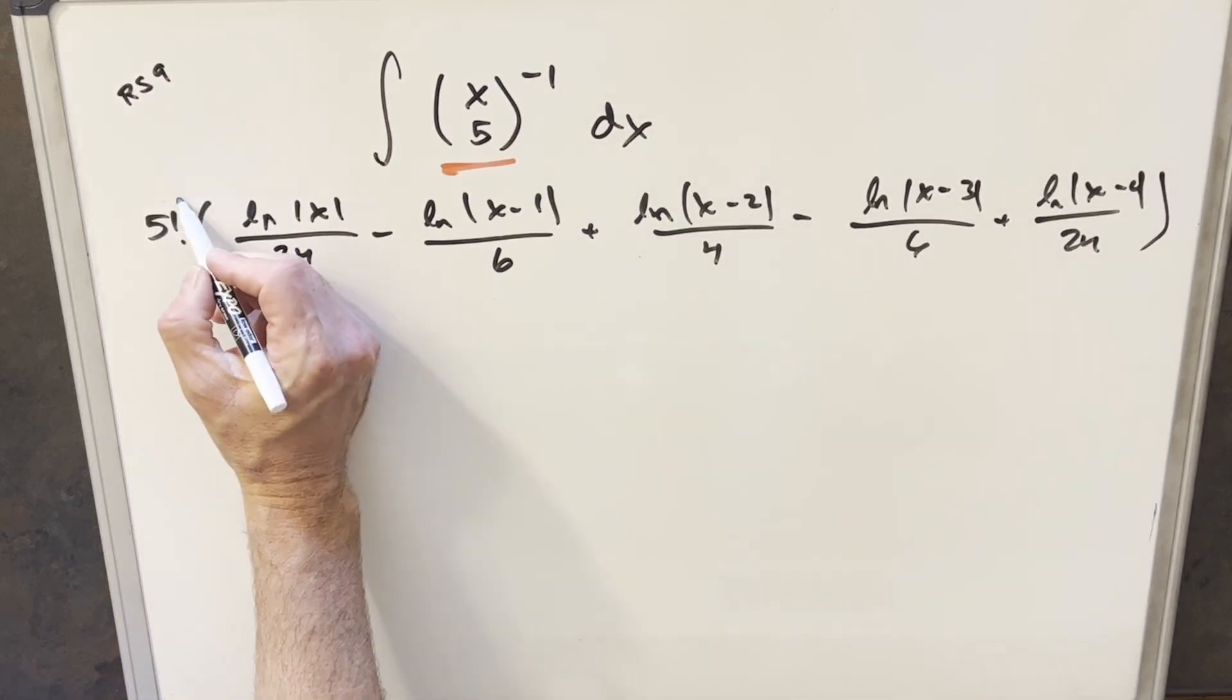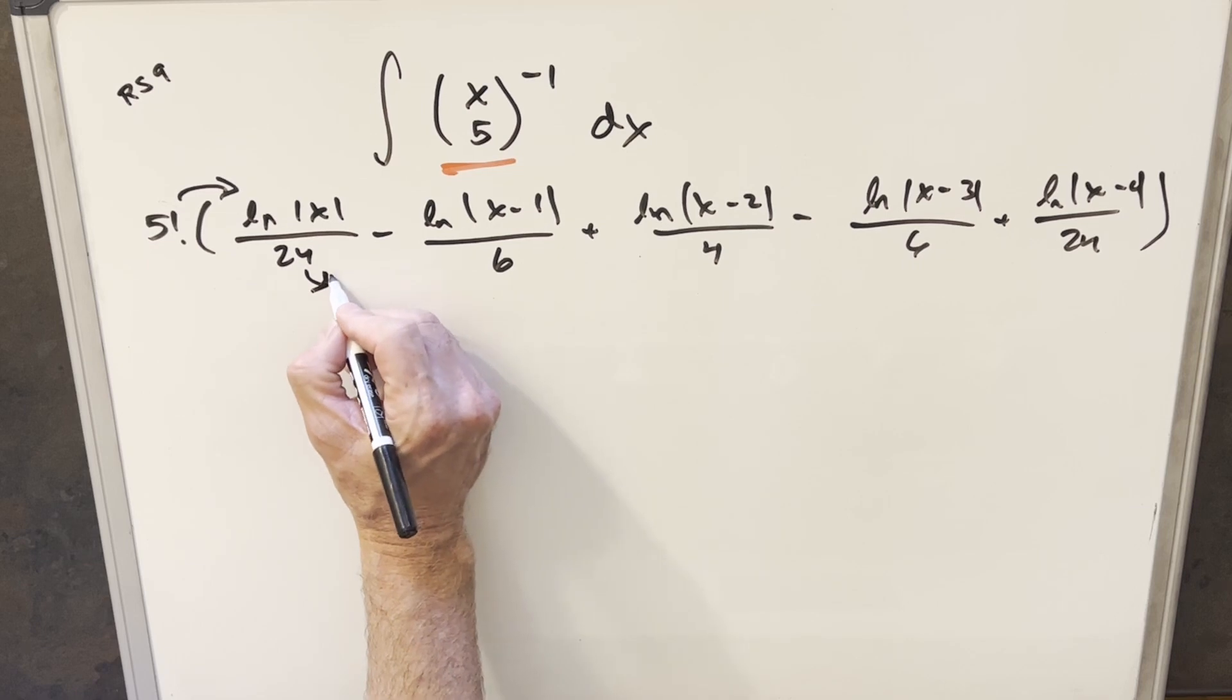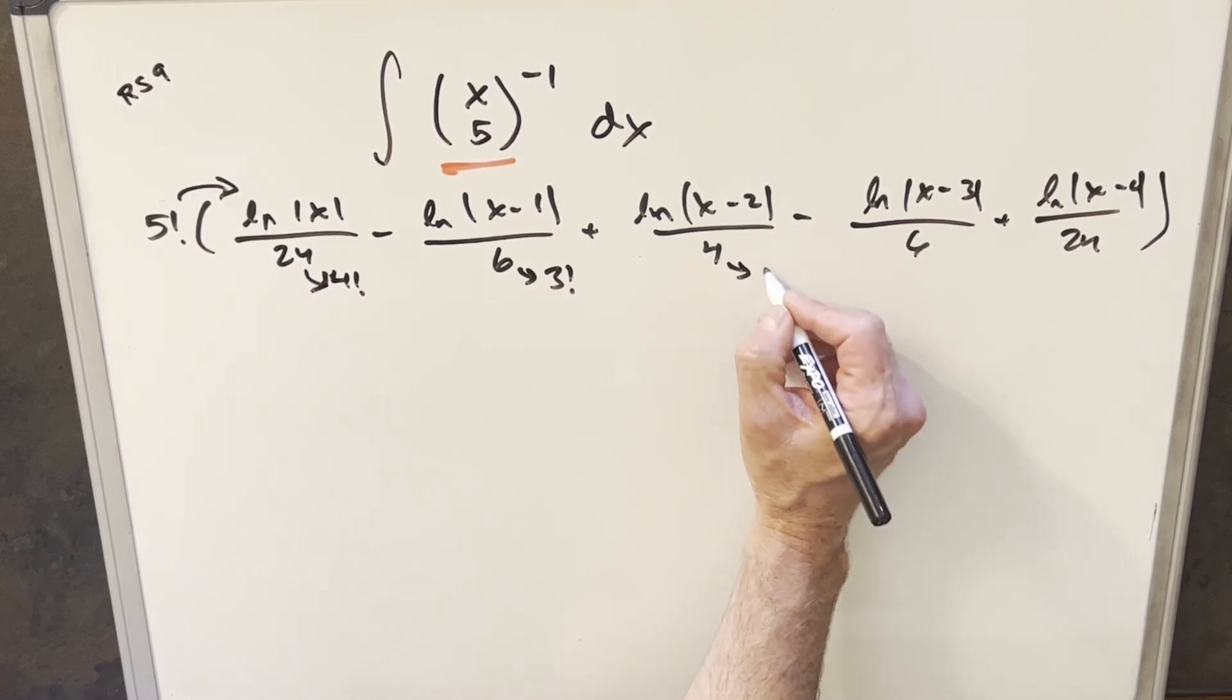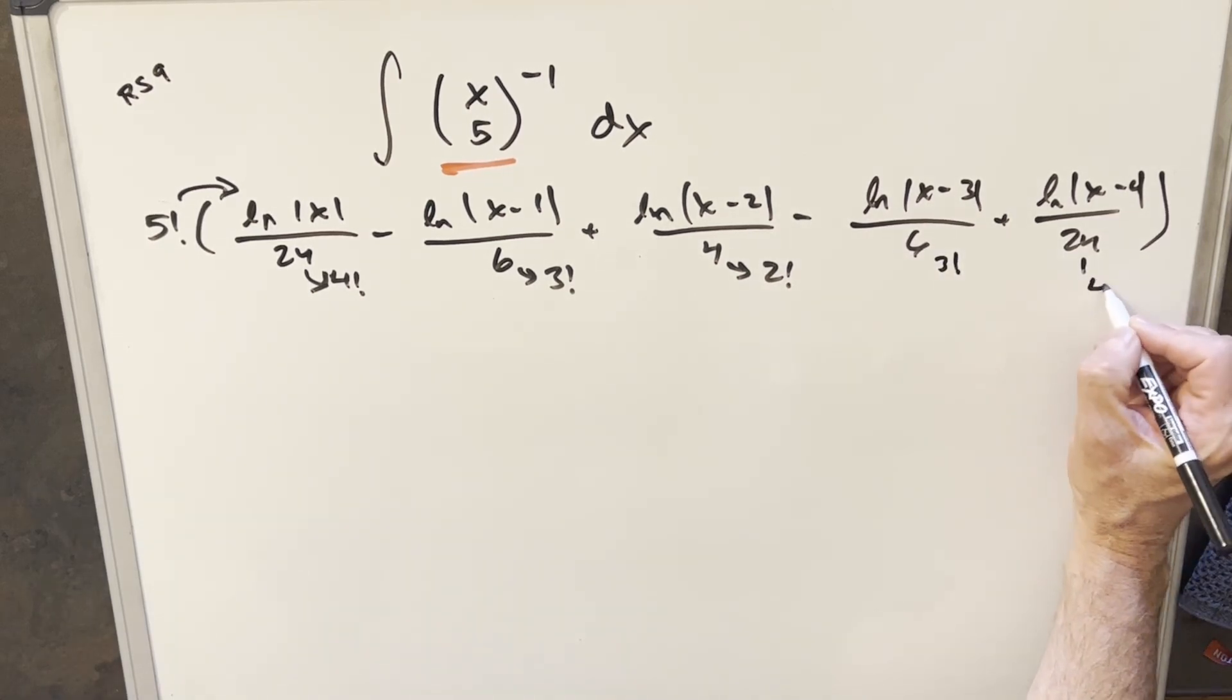And now just one more step before I distribute in this 5 factorial. We can just notice that all these denominators we can write as factorials, maybe just to make it a little easier. So 24 is 4 factorial. 6 is 3 factorial. This is 2 factorial. This is going to be 3 factorial again and 4 factorial.